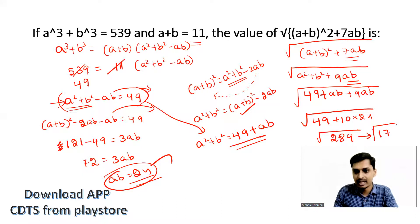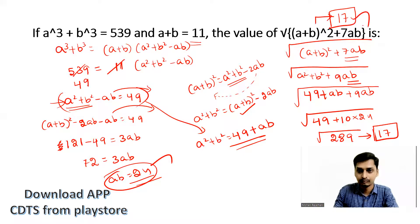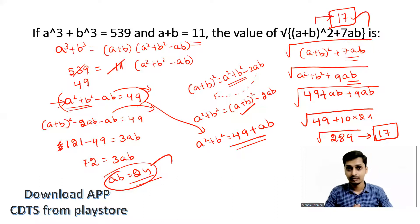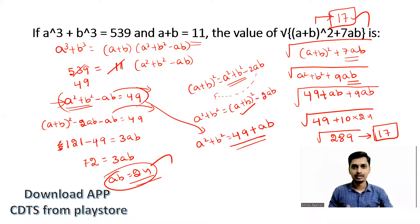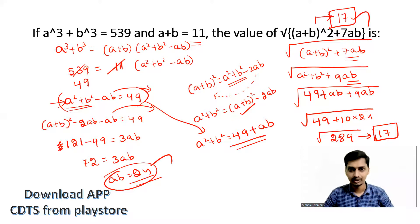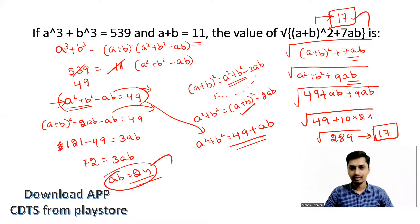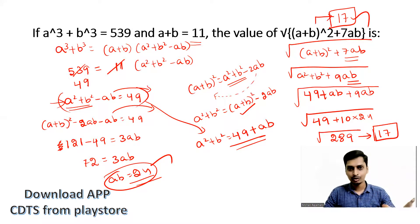So the answer for this problem is 17. It is mandatory to know algebraic identities: a³ + b³, (a + b)³, a³ − b³, (a − b)³, a² + b², (a + b)². You should know these basic algebraic formulas to solve this kind of problem. You can expect this kind of question at the advanced level, so you need more practice on similar problems.